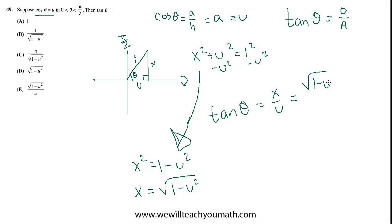So, square root 1 minus u squared if I can fit that in there all over u. And which choice is that? 1 minus u squared over u? That's e.